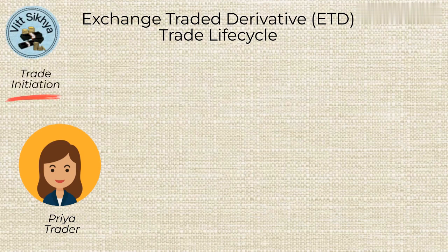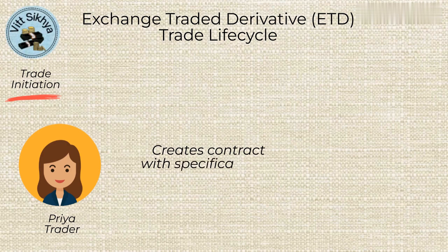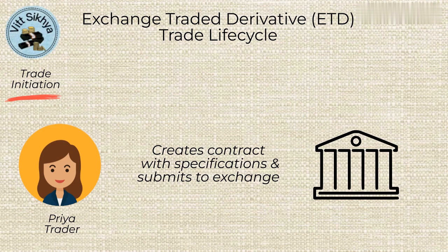The first stage of the life cycle of an ETD is trade initiation. This occurs when a buyer and a seller agree to enter into a contract to buy or sell an underlying asset at a specified price and time. The trade is executed on an exchange and the terms of the contract are standardized by the exchange. Trader Priya creates a short-put option contract with the specifications mentioned above and submits it to the exchange, where it can be bought and sold by other market participants.